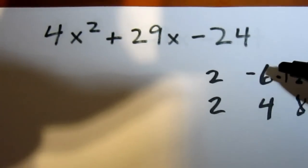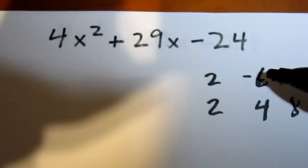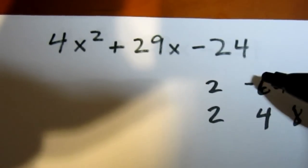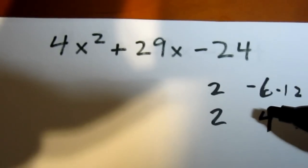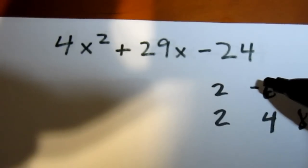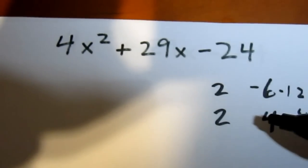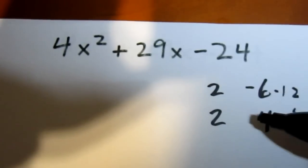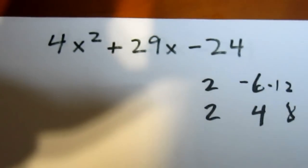So instead of negative 6 and 4, I could try positive 6 and negative 4, but that obviously won't work. So I could try negative 8 and 3 here. It won't work. I could try negative 12 and 2 here. It won't work. And I could try negative 24 and 1 here, and it won't work. And neither will it work if we reverse the signs.